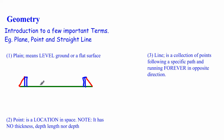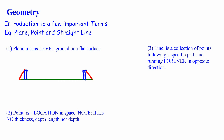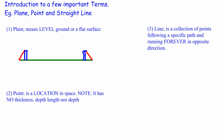So this green line represents the surface of the football field — the green grass. If you notice, it's flat and level. That's all we mean when we speak about a plane.